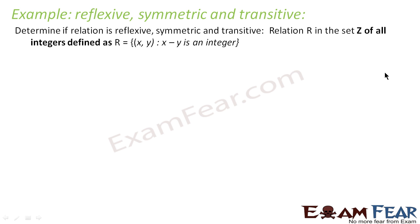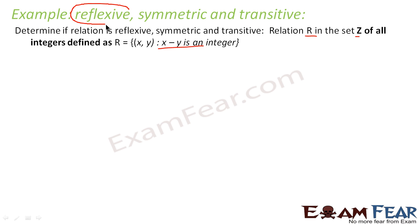Let's take some more examples. Here again we have to determine whether the relations are reflexive, symmetric, or transitive. The relation is defined on the set Z of all integers as xRy where x minus y is an integer. Since the integers are a huge set, it's difficult to find the relation set explicitly, so we will try using the concept-based approach.